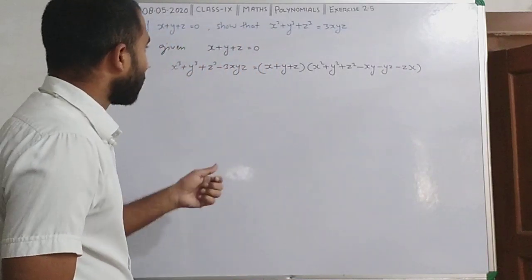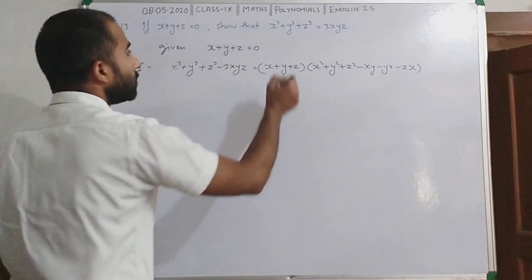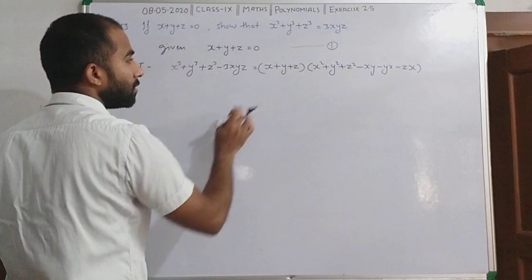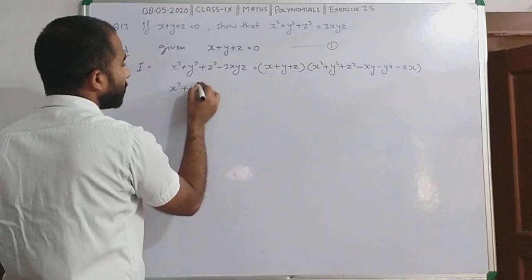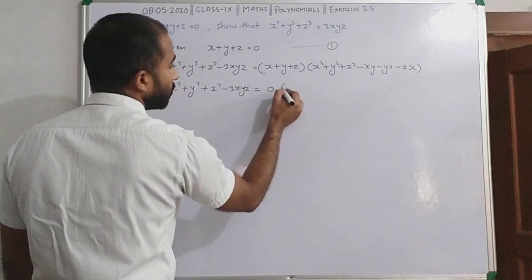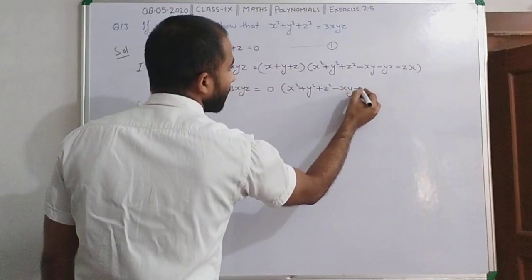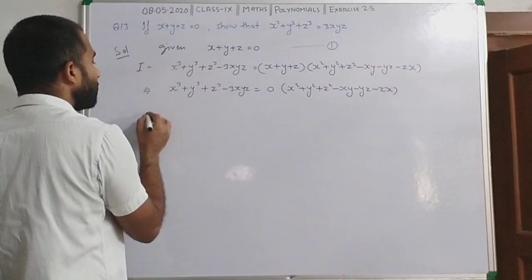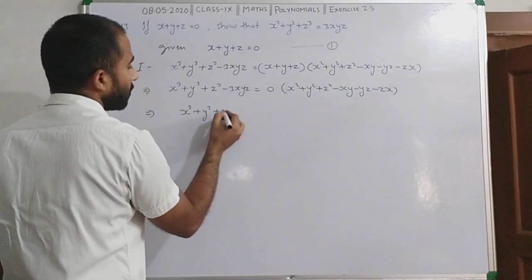ठीक है. तो इसको solve करते हैं. Question क्या कह रहा है — x plus y plus z is equal to 0. अगर मैं equation 1 बोलूं, putting the value of equation 1 in here: so यहां पे हम 0 रख देंगे. So x³ plus y³ plus z³ minus 3xyz is equal to 0 times (x² plus y² plus z² minus xy minus yz minus zx). आपको मालूम है कि 0 से किसी भी चीज को multiply करो तो वो 0 हो जाएगा.